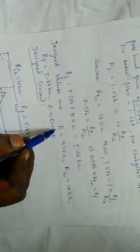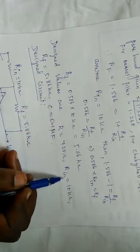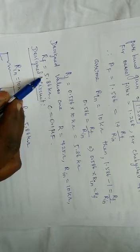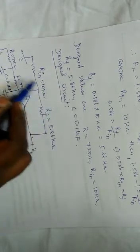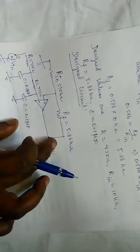The designed values are: R calculated, C assumed, and Rf and Rn calculated. The question asks to design the second order Butterworth low pass filter. Finally, we design the circuit. Second order means 2 RC filters are used — first order means 1 RC, second order means 2 RC. This is our designed circuit.